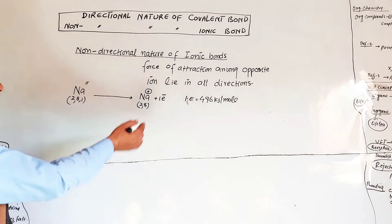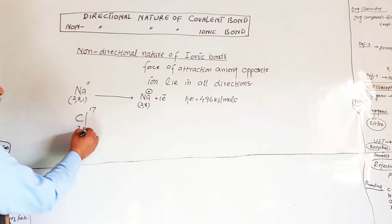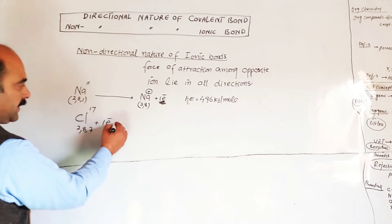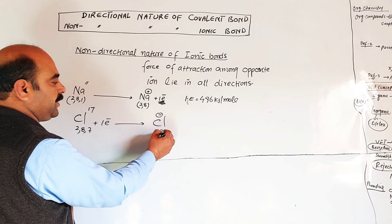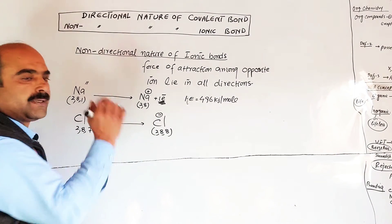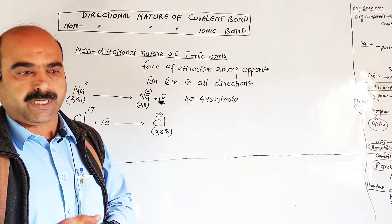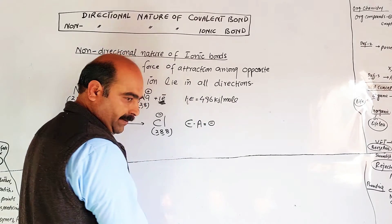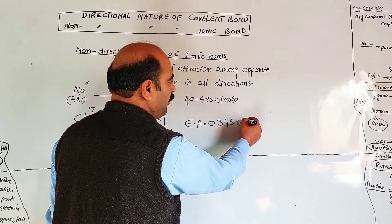Chlorine has atomic number 17 and electronic configuration 2, 8, 7 — seven electrons in the last shell. When chlorine gains one electron, it completes its octet and becomes a chloride ion with a negative charge. The energy released is the electron affinity, approximately 348 kilojoules per mole.